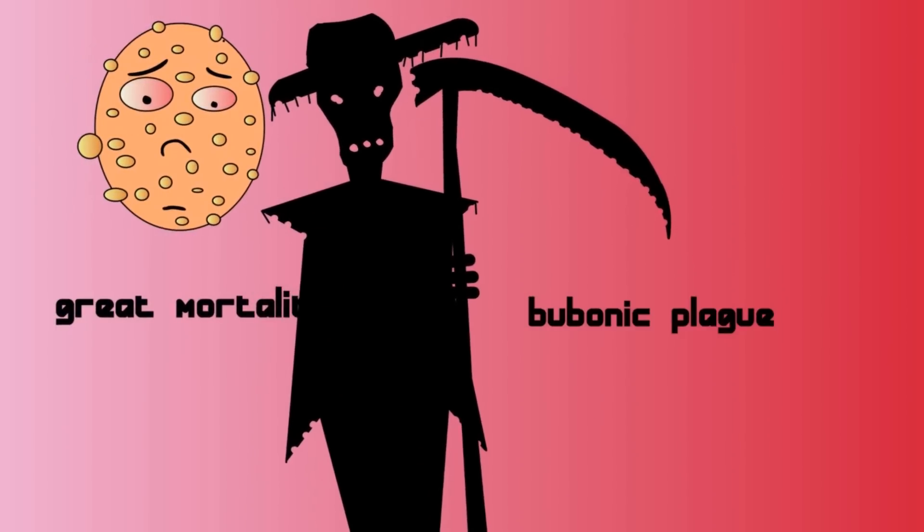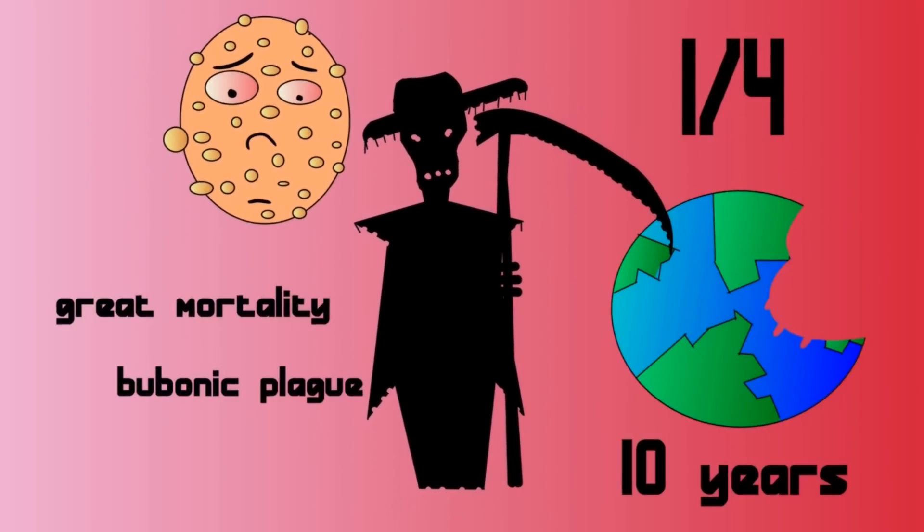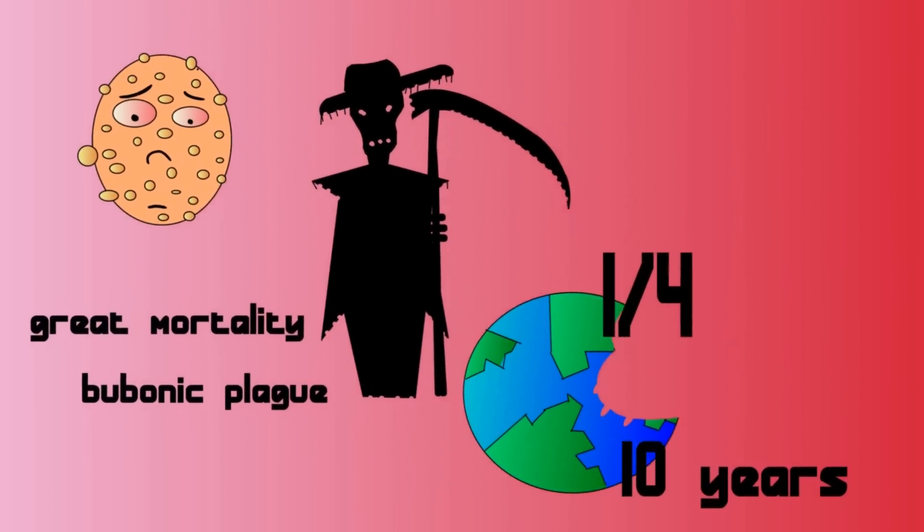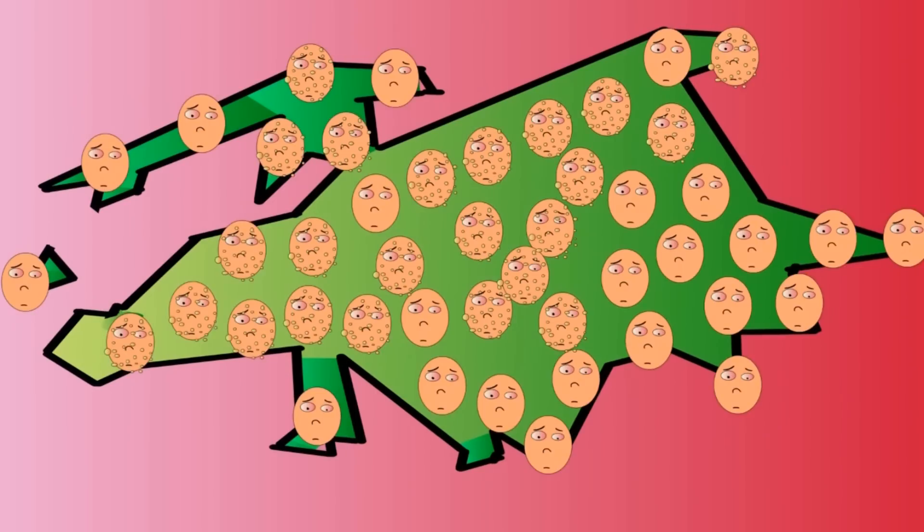Approximately one-fourth of the population of the entire world was wiped out within about ten years. Best guesses are from 450 million down to 350 million people. The plague hit Europe the worst, wiping out approximately 50% of the entire population.